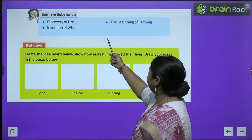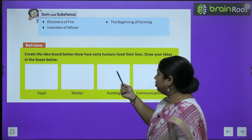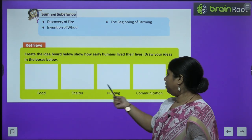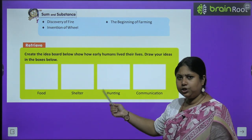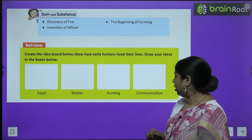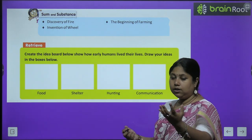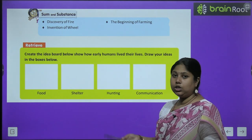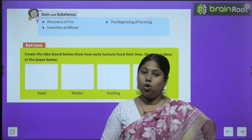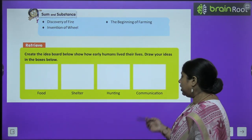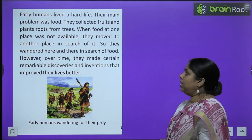In this chapter we are going to learn about the discovery of fire, the beginning of farming, and the invention of the wheel. But before this, create an idea about how early humans lived their life — draw your ideas in the four boxes given. You need to draw how early humans ate food, what kind of shelter they had, how they hunted, and how they communicated. Early humans ate fruits, vegetables, and animal flesh. They mostly lived in caves, used stones and spears for hunting, and used sign languages or pictures for communication.